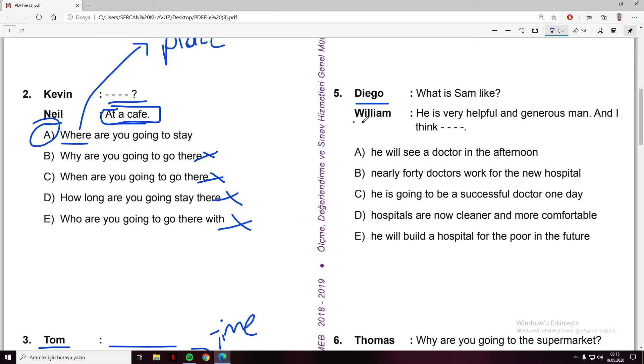Diego and William: what is Sam like? He is very helpful and generous man. And I think - it's a comment. He will see a doctor in the afternoon - no. Nearly 40 doctors work for the new hospital - no. He is going to be a successful doctor one day - no. Hospitals are now cleaner and more comfortable - no. He will build a hospital for the poor in the future - he thinks, it's a prediction. As you see, we use will for prediction about the future.